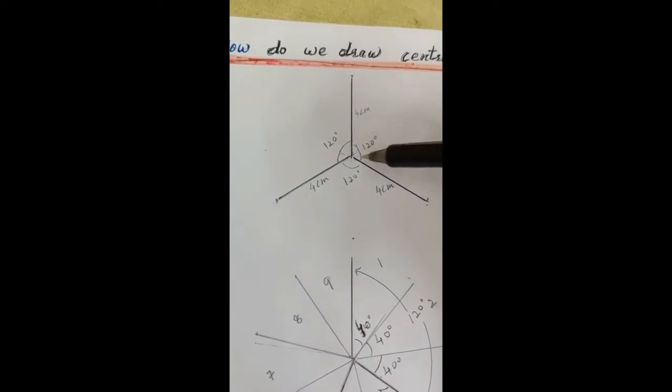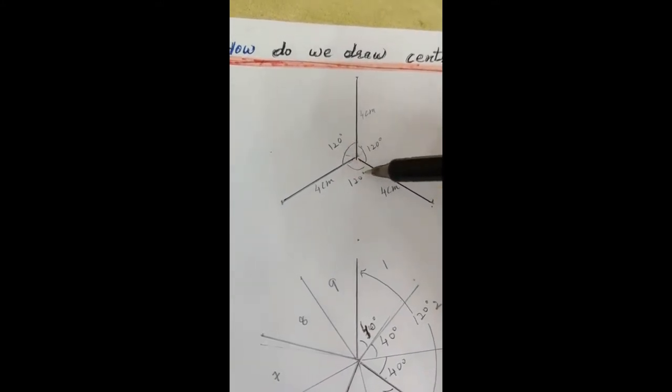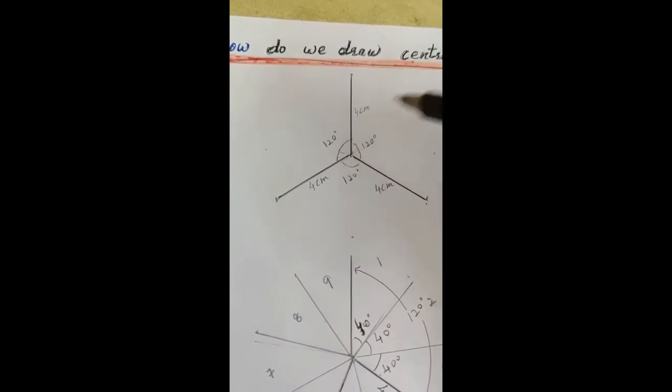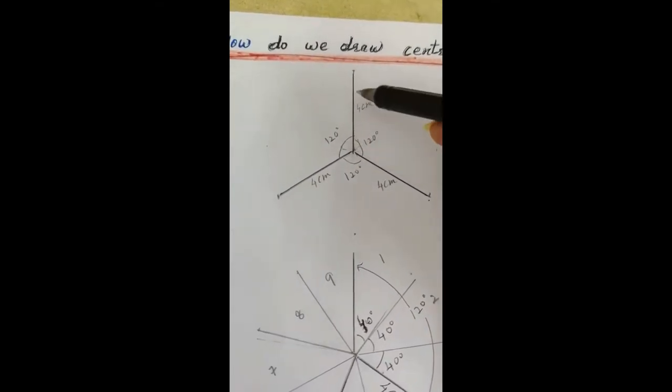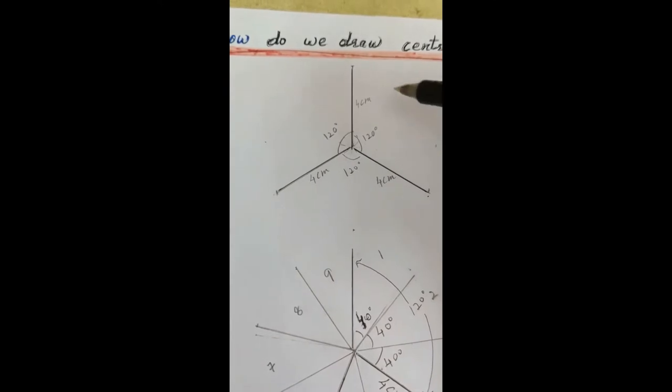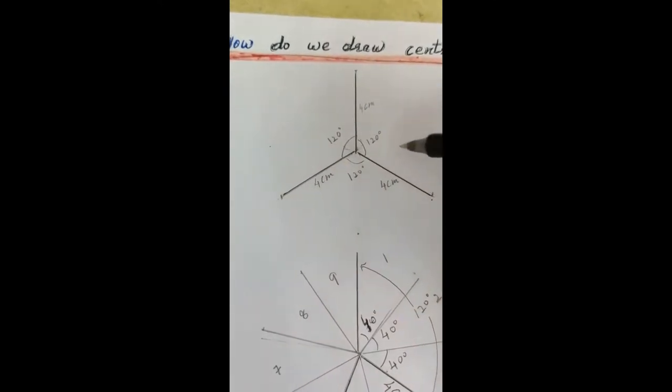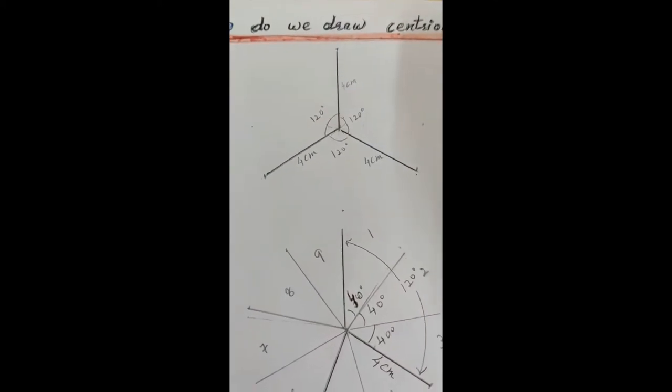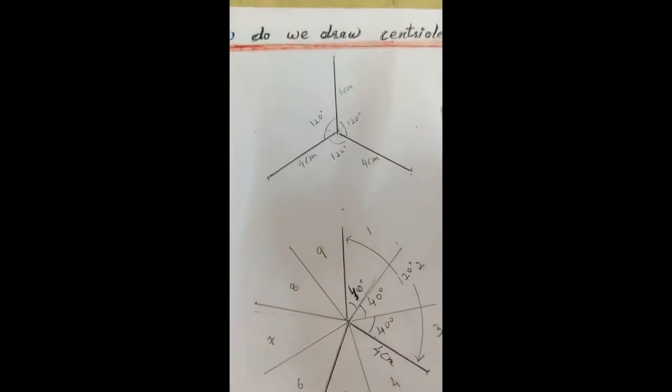And you have got three lines of four centimeter each with intervening angles 120, which means a full 360 angle is complete. So in a way these are three radii of a circle with four centimeter radius.